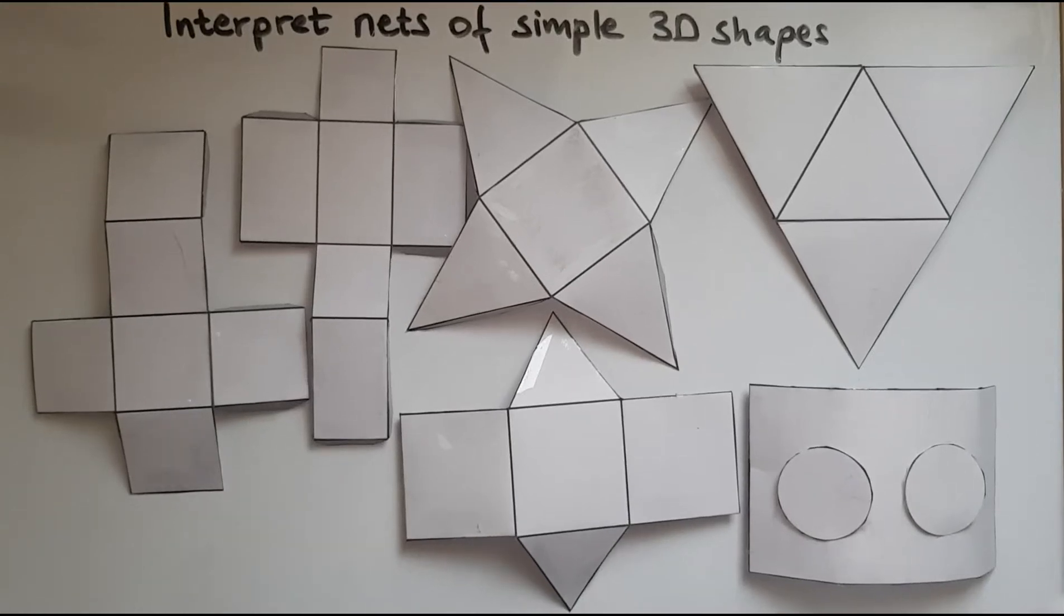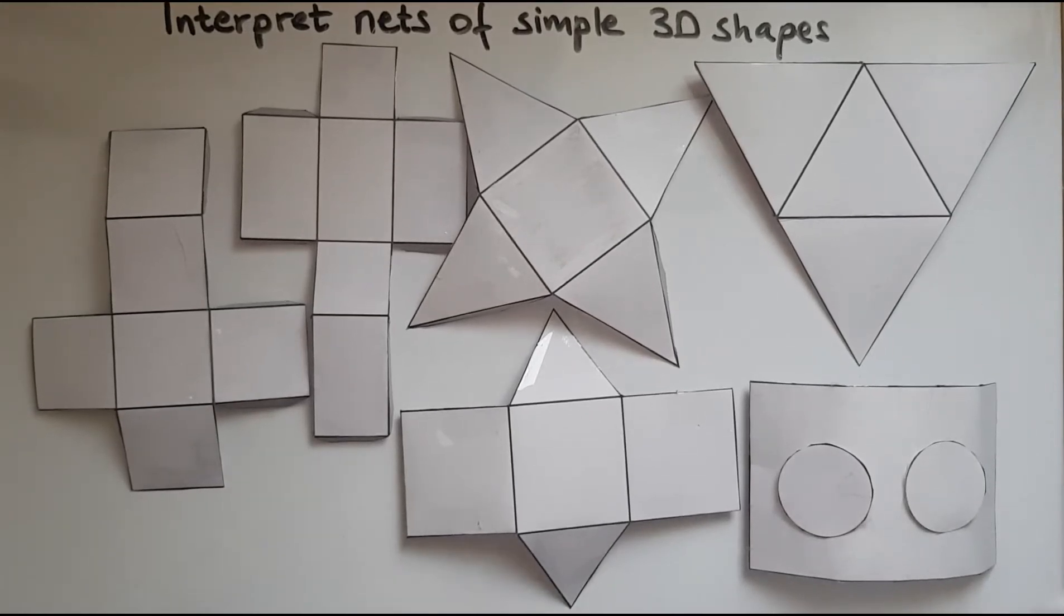In this video we'll learn to interpret nets of simple 3D shapes. I've got six simple 3D shapes and actually their nets on this whiteboard and I'd like you to just think which of these shapes they would make.